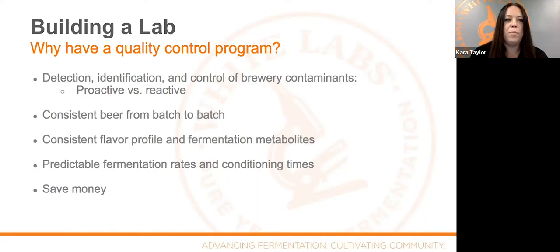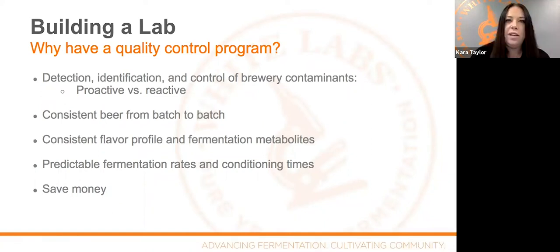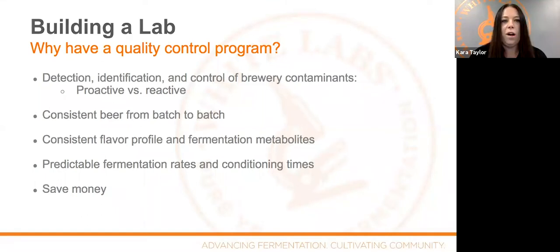Really, why we want to do this is to look at consistent beer from batch to batch. If you're brewing the same brand, you want to know the consistent fermentation profile, the flavor profile, the rate of fermentation. We want to detect, identify, and control brewery contaminants. All of these things allow us to be proactive versus reactive, and ultimately this type of quality control program will help you save money — potentially from recalls — and result in a better quality product.